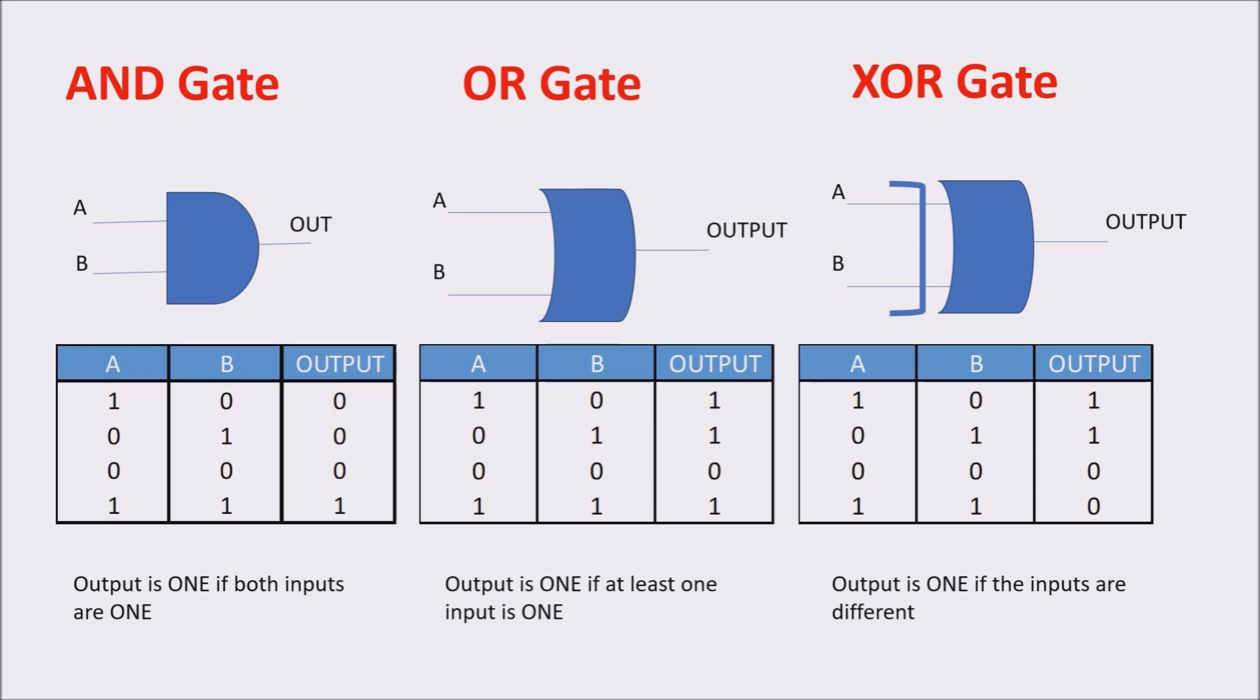We remember that AND output is 1 only if it has both inputs to 1. OR output is 1 if at least 1 input is 1. And XOR gate output is 1 when its inputs are different, so 1, 0 or 0, 1. And it is 0 if its inputs are the same, so 0, 0 or 1, 1.